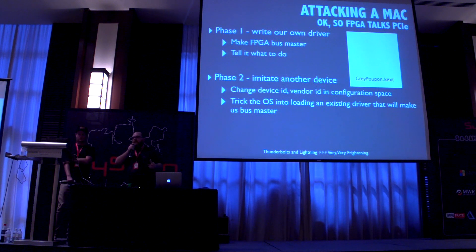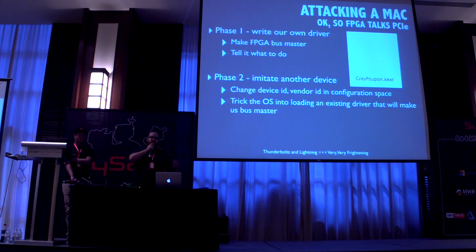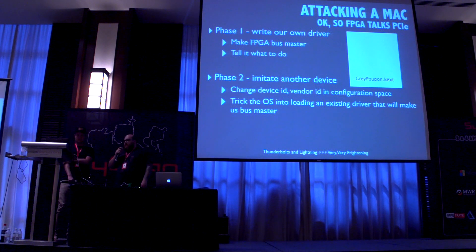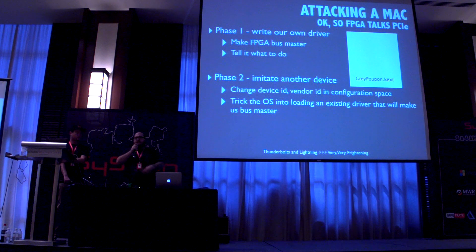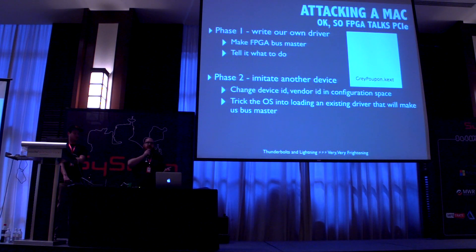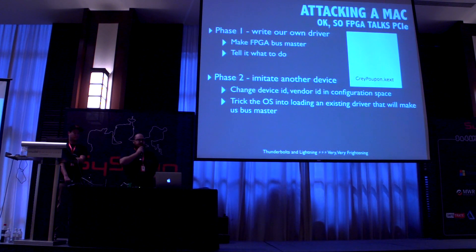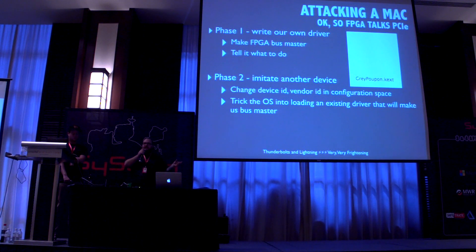The next phase was to imitate a legitimate device whose driver will set bus master. We chose the Apple SDXC device because it has the IO PCI tunnel flag in the driver, which means it's allowed to be connected over Thunderbolt. We set the device ID and vendor ID in the FPGA config registers to match that device — enough configuration to satisfy IOKit's matching requirements. IOKit finds the Apple SDXC driver, loads it, the driver decides it looks like its device, and sets bus master.